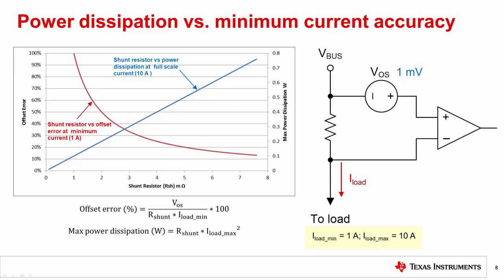Consider an application with a minimum current of 1 amp and a maximum current of 10 amps, and an amplifier with V_OS equal to 1 millivolt. The red plot shows the variation in the offset error at minimum current versus shunt resistance for this application. The blue plot shows the variation in the power dissipation at maximum current versus shunt resistance. What we can see here is increasing the shunt resistor value improves current accuracy but also increases power dissipation. Decreasing the value of the current shunt resistor reduces the power dissipation requirements but increases the measurement errors.